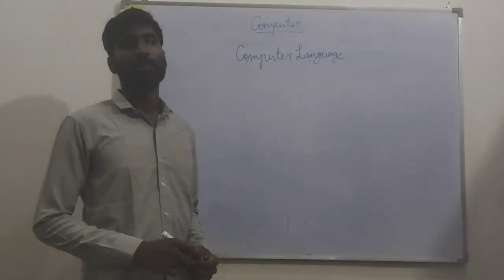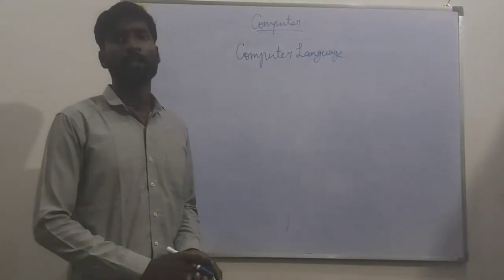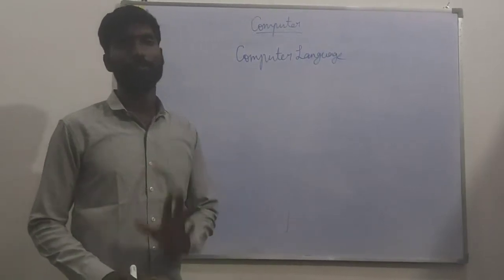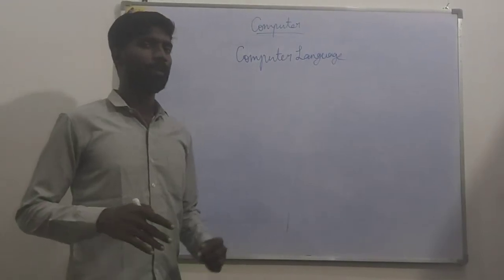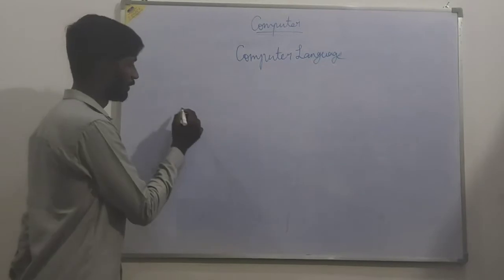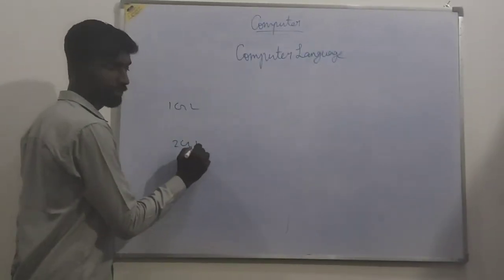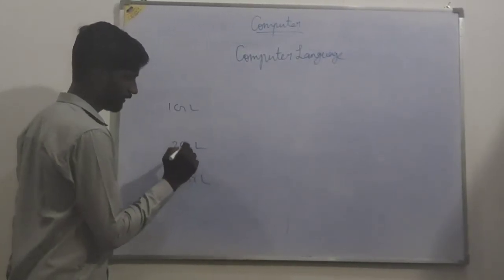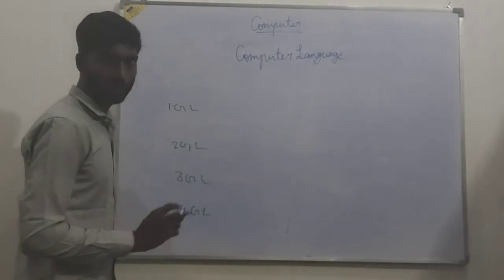Special greetings, my dear students. Today, in a very short way, I am going to revise our second chapter: computer language. How many languages are there? Only four languages. First generation language, second generation language, third generation language, and fourth generation language.